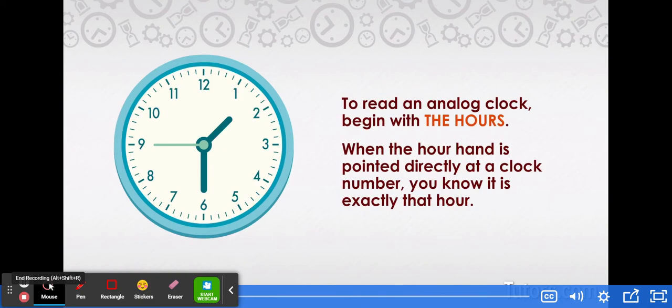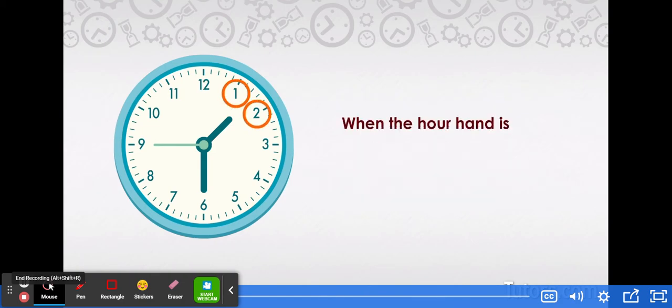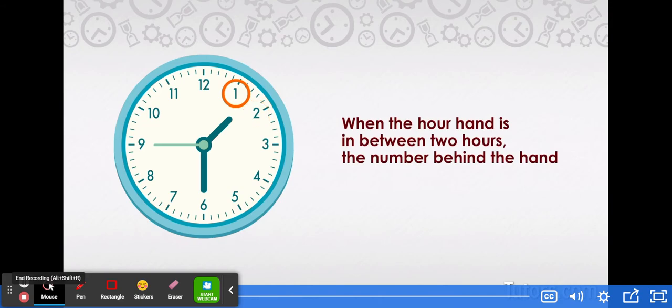Most of the time, you will see it pointing between two numbers. When the hour hand is in between two hours, the number behind the hand is the current hour. For example, if the hand is past one, then we are at some time between one o'clock and two o'clock.